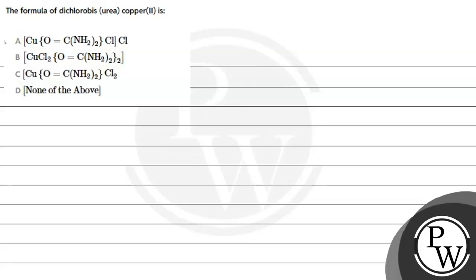Hello guys, let's see this question. The question says the formula of dichlorobis(urea)copper(II) is, so we have to tell this formula.